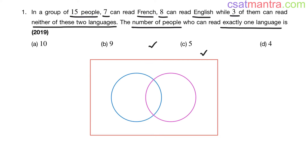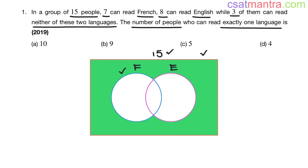This rectangle is the sample space — total number of people, which is 15. In these 15 people, there are few people who read French, shown by the blue color circle, and few who read English, shown by the pink color circle. There are few people who read neither of these two languages — that is the area outside of these two circles. It is given that 3 of them can read neither language, so that green color area is 3.